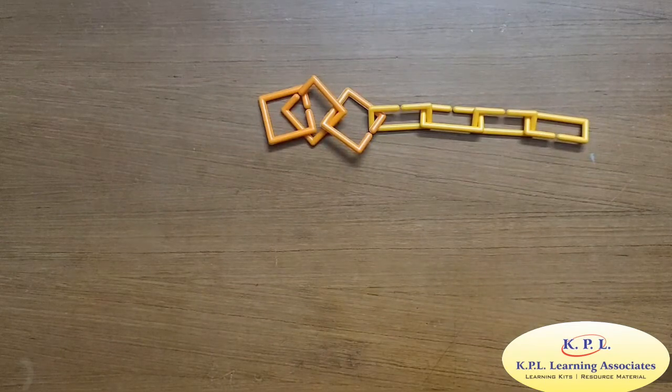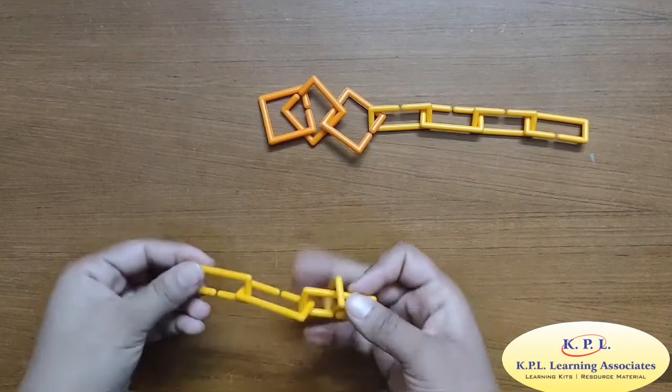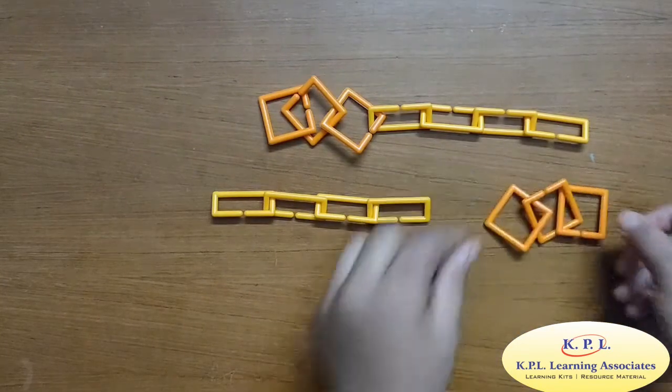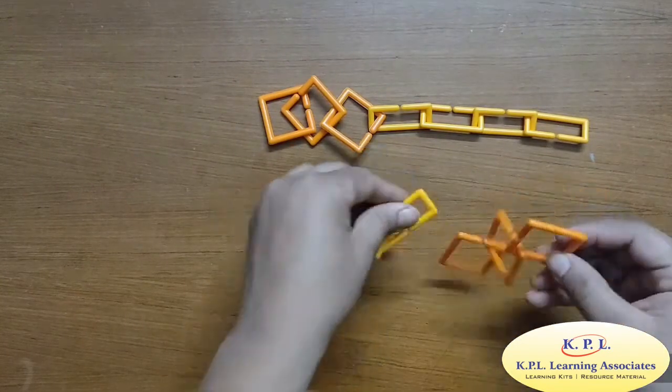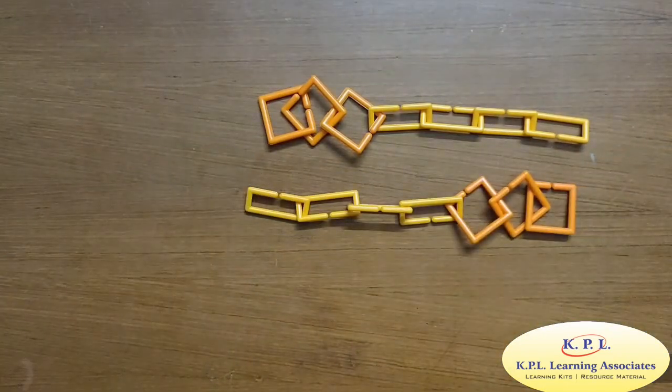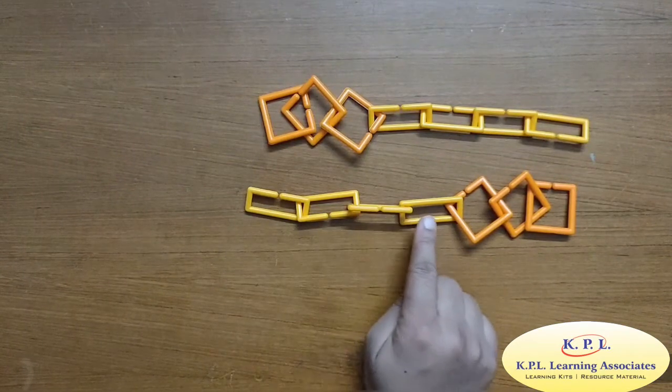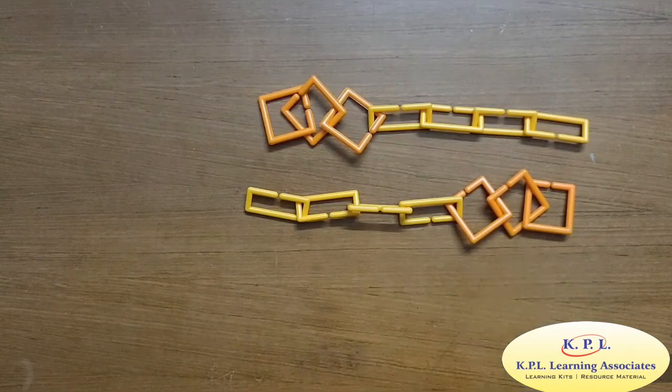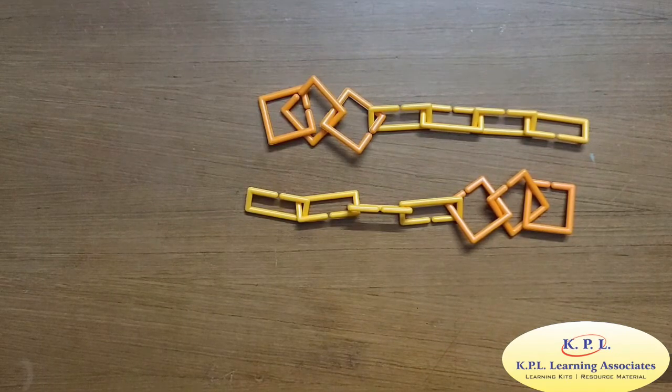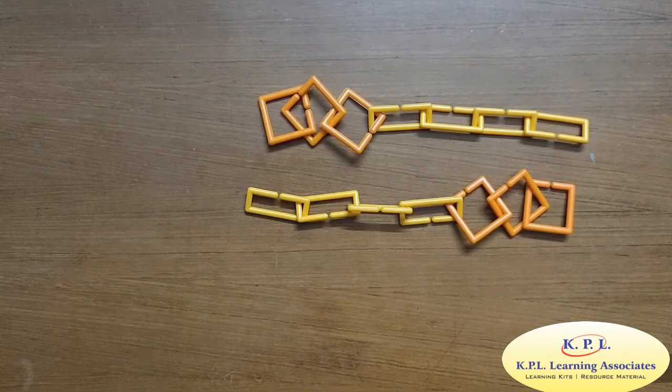Let us try with 4 rectangles and 3 squares. Let's connect them. How many clips do I have now? 1, 2, 3, 4, 5, 6, 7. 7 clips. 4 added to 3 is 7 or 3 added to 4 is also 7.